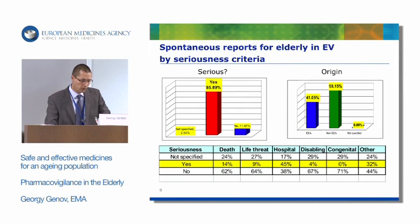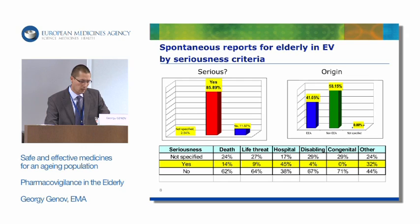Looking at spontaneous reports in the older population, about 85% are serious. Of those, 14% resulted in death and about 45% resulted in hospitalization. Looking at the region of these reports, about 41% comes from the European Economic Area and the rest from outside the EEA.